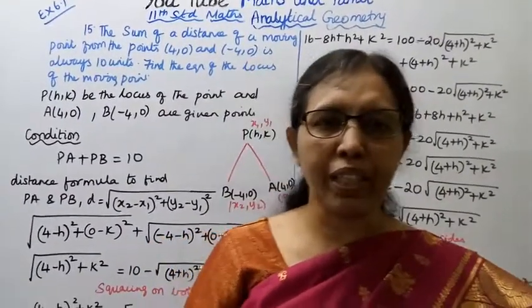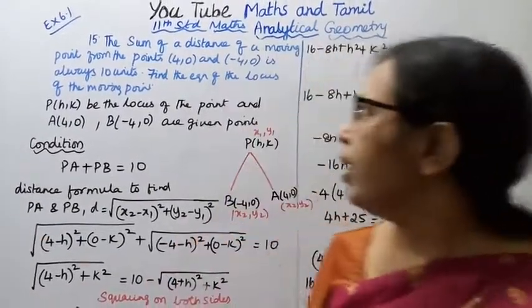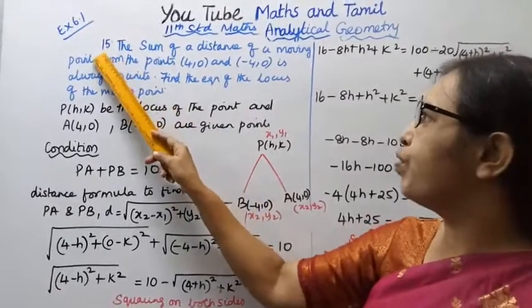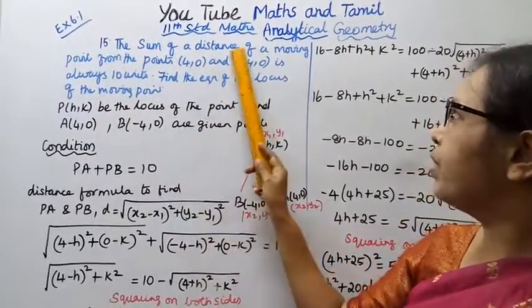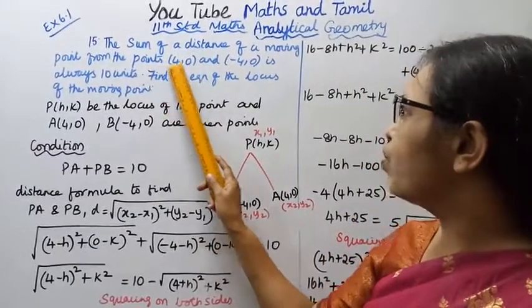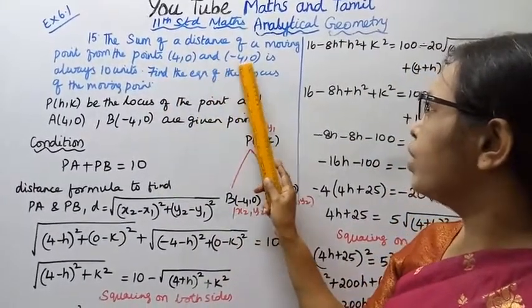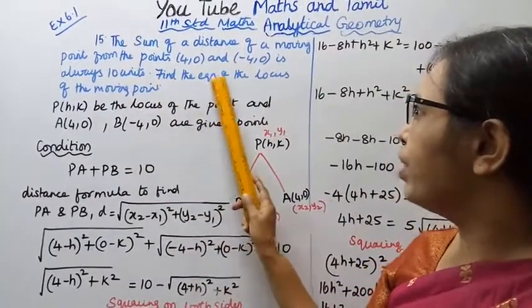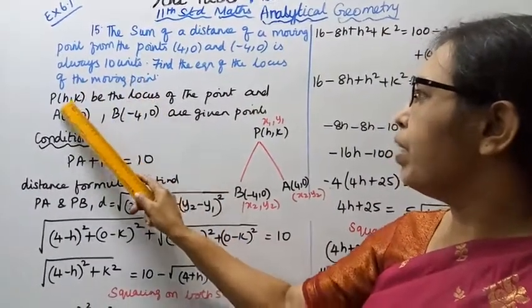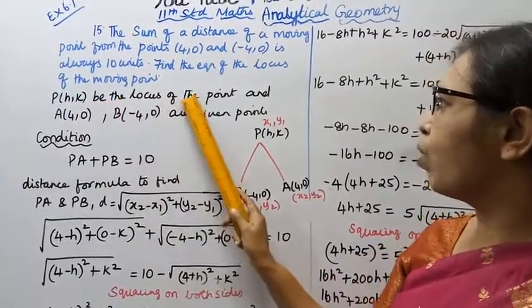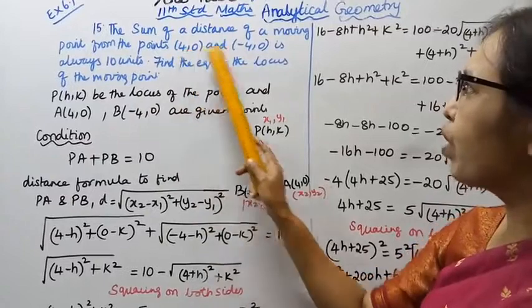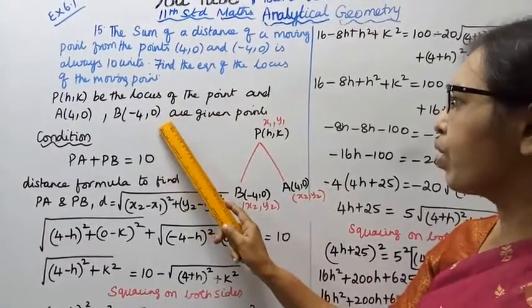Hello students, welcome to Max and Tumble channel. Center Max Analytical Geometry Exercise 6.1, question 15. The sum of distances of a moving point from the points (4, 0) and (-4, 0) is always 10 units. Find the equation of the locus of the moving point. Let P of (h, k) be the locus of the point.